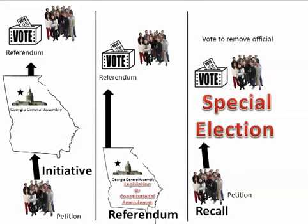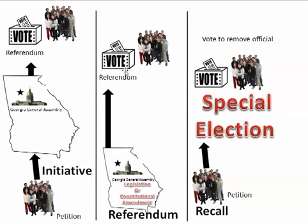Now the second one, referendum, is where the Georgia General Assembly — our state legislature in Atlanta — when it has legislation or a constitutional amendment it wants to put to a vote, sends it to a referendum vote and the people vote on it directly. So here, the people are directly making laws.